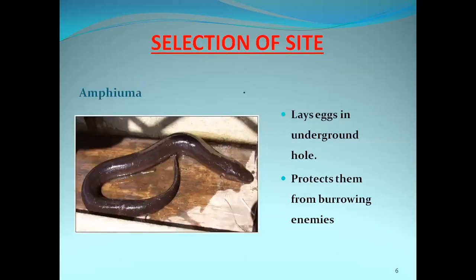Another example for selection of site is Amphiuma, commonly called the Congo Eel. This Congo Eel lays eggs in underground holes, and this underground hole is selected to protect the eggs from burrowing enemies. In this way, Amphiuma selects a special site where the eggs will not be threatened by predators.